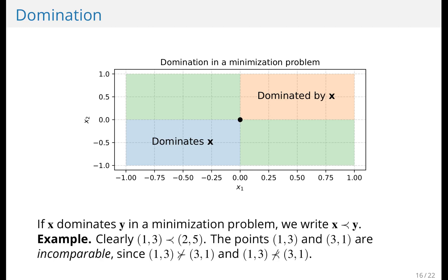The green area is interesting because it consists of an area where points would be incomparable to x. If x dominates y, we use the less-than-or-equal-to sign, which is curly typically. Clearly, (1, 3) dominates (2, 5) in a minimization context. Though the points (1, 3) and (3, 1) are incomparable, since neither one dominates the other.